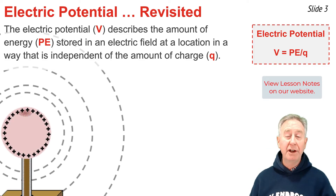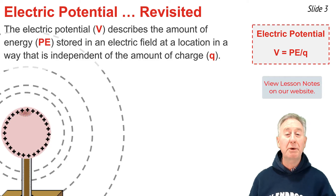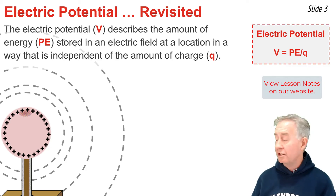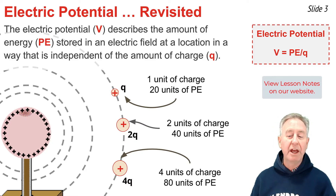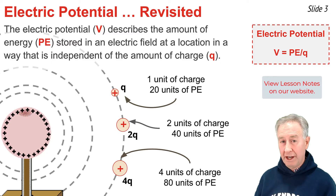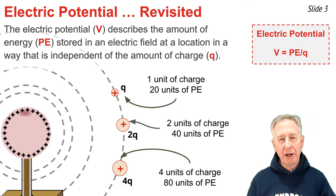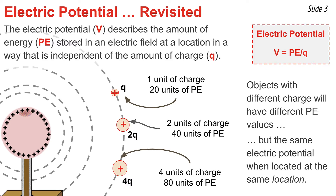Here is a Vandegraaff generator, and on the diagram you see a series of lines that represent varying locations at different distances from the surface of that Vandegraaff generator. We could take any one of these lines and place several charges upon them. The charges could be different amounts and therefore would have different amounts of potential energy, but the ratio of potential energy per charge should be the same for each object. For instance, we could place three charges on the outer line — Q, 2Q, and 4Q — and notice that 20 to 1, 40 to 2, and 80 to 4 all reduce to the same ratio of 20. Objects with different amounts of charge would experience different amounts of potential energy, but the same electric potential when located at the same location.